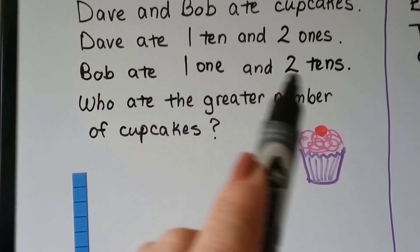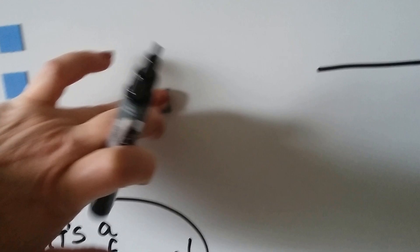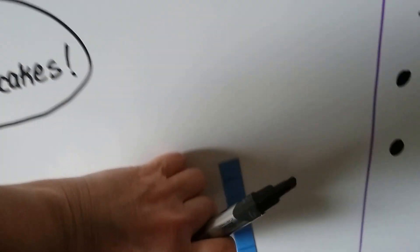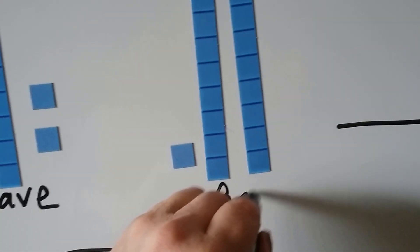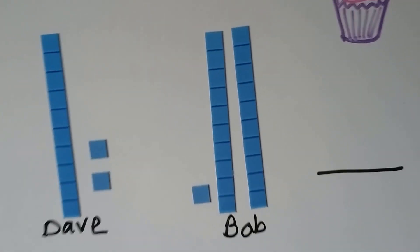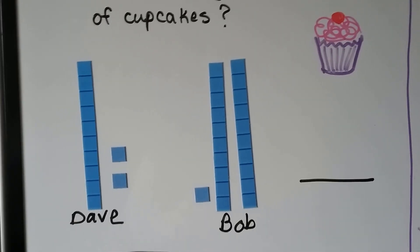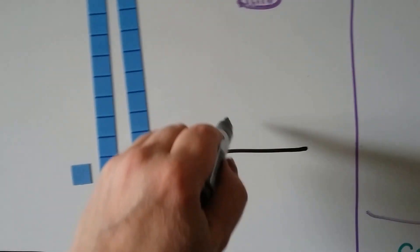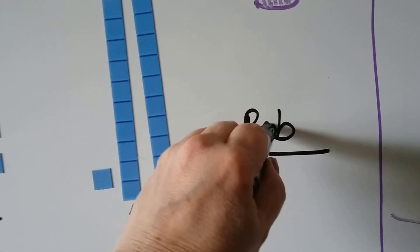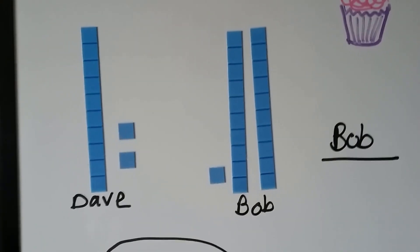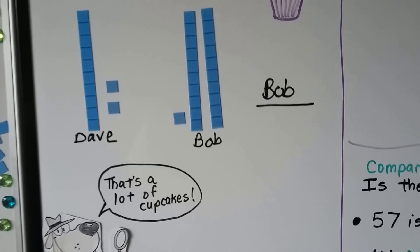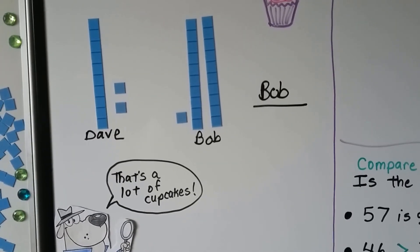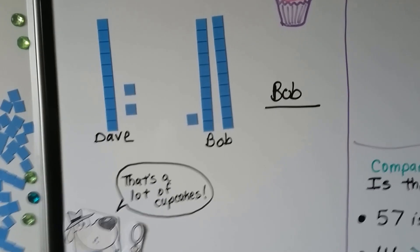Bob ate 1 one and 2 tens. So Bob has 1 one but 2 tens. We can look at these and compare — he has more tens. So Bob ate the greater number of cupcakes. Bob ate 21 cupcakes. That's a lot of cupcakes! Even 12 is a lot, but 21 cupcakes is an awful lot to eat.